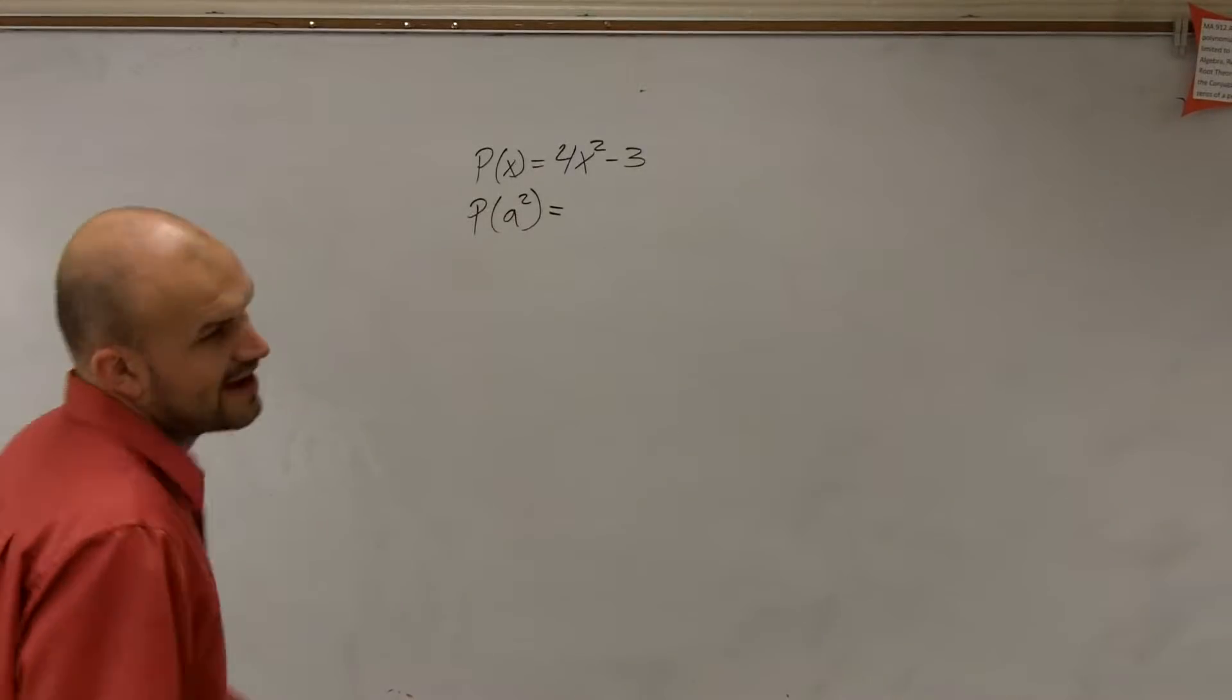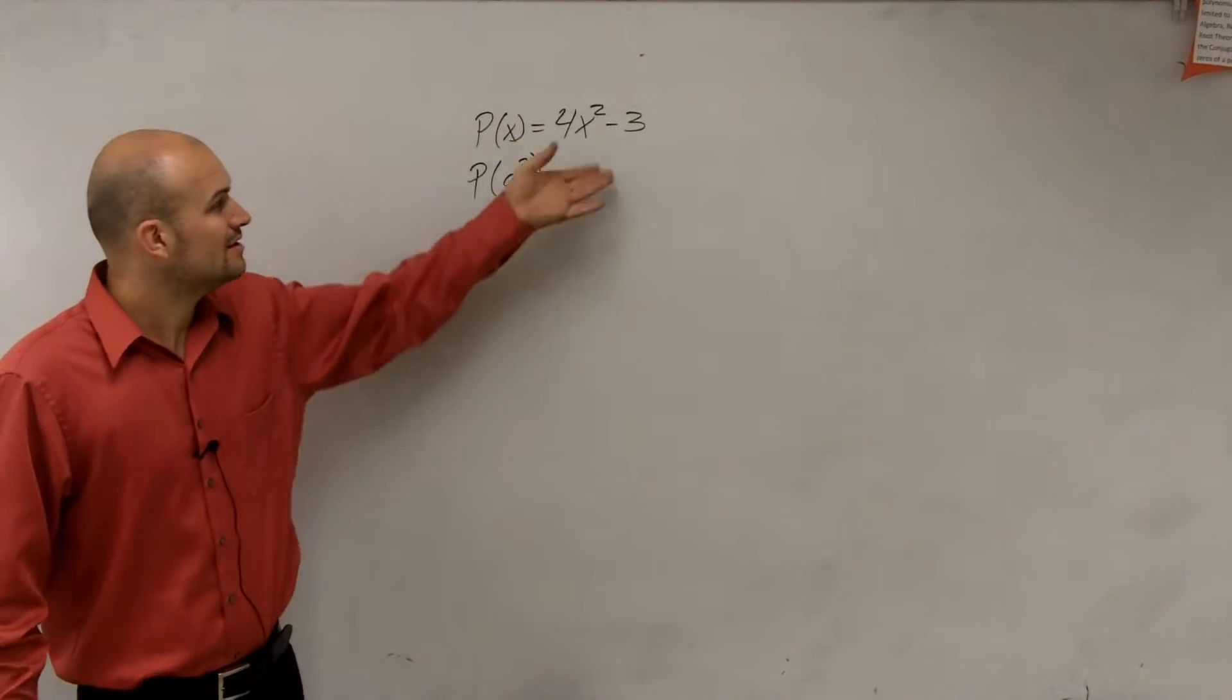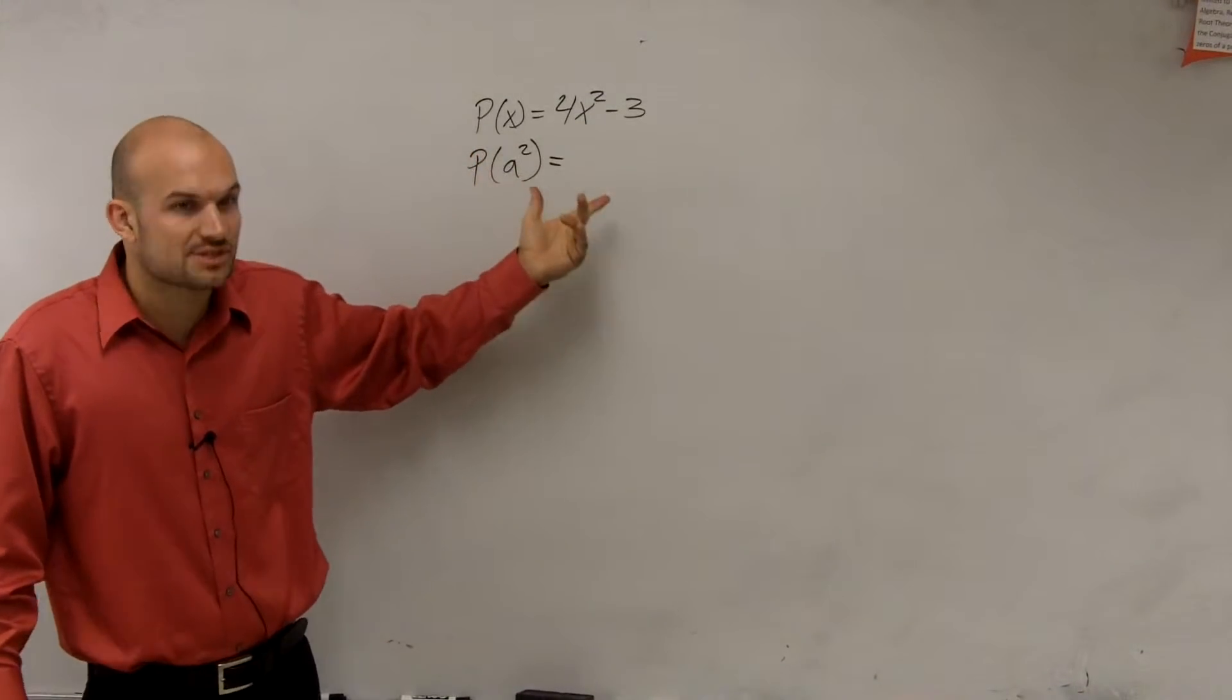So now for the next one, I have p of x equals 4x squared minus 3. So now what they're asking us to do is I want you to evaluate my function p for a squared.